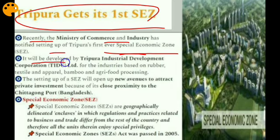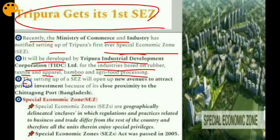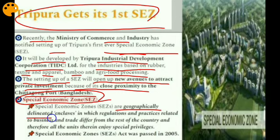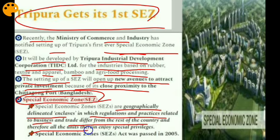The SEZ will be developed by Tripura Industrial Development Corporation Ltd. for industries based on rubber, textile and apparel, bamboo, and agri-food processing. Setting up the SEZ will open new avenues to attract private investments due to its close proximity to the Chittagong port of Bangladesh. Special Economic Zones are geographically delineated enclaves where regulations and trade practices differ from the rest of the country, and all units therein enjoy special privileges.